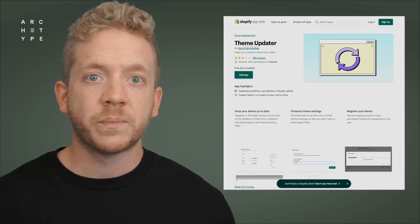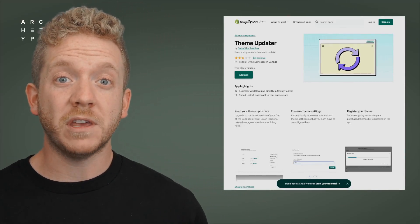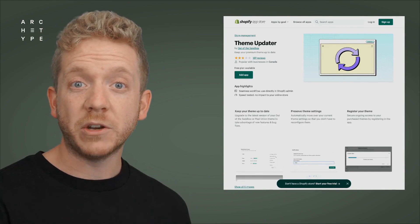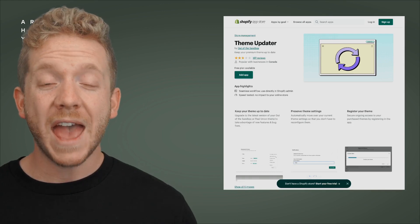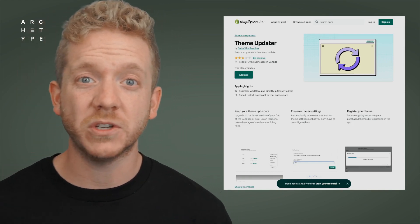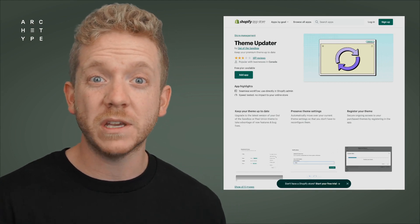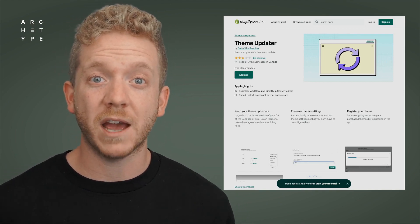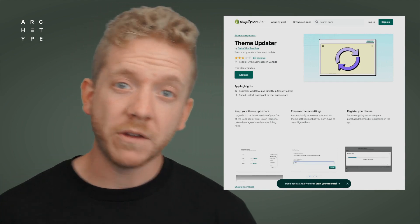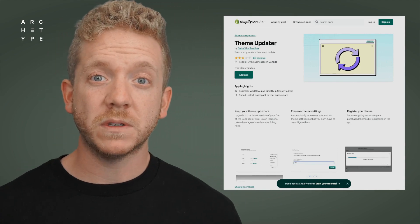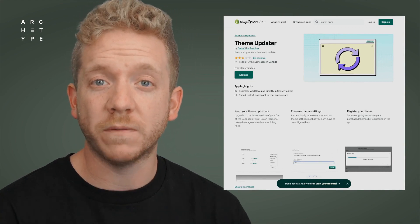The theme updater app by Out of the Sandbox makes upgrading your theme even easier by transferring configuration files from one theme to the new version, as well as theme customizations — so those customizations that may have been hard to track down manually are automatically picked up and transferred. Previously this app only worked with Out of the Sandbox and Pixel Union themes, but thanks to a recent partnership, it now works with all Archetype themes.